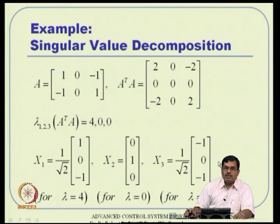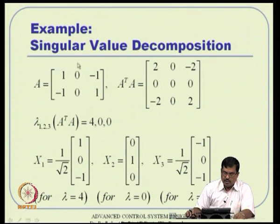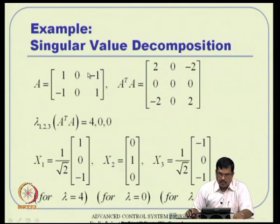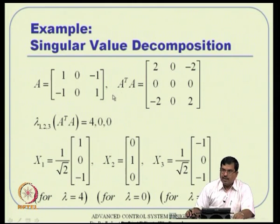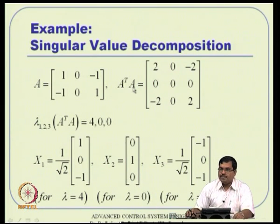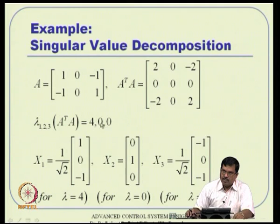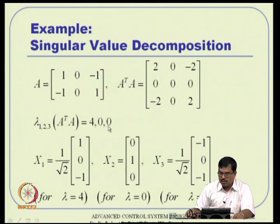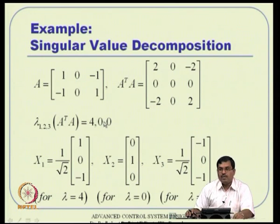Let us quickly review singular value decomposition using the same example from last class. Starting with matrix A, we first find the singular values, which are the positive square roots of the eigenvalues of A^T*A. The matrix A^T*A is guaranteed to be positive semi-definite, as is A*A^T. In this example, A^T*A has eigenvalues 4, 0, 0.